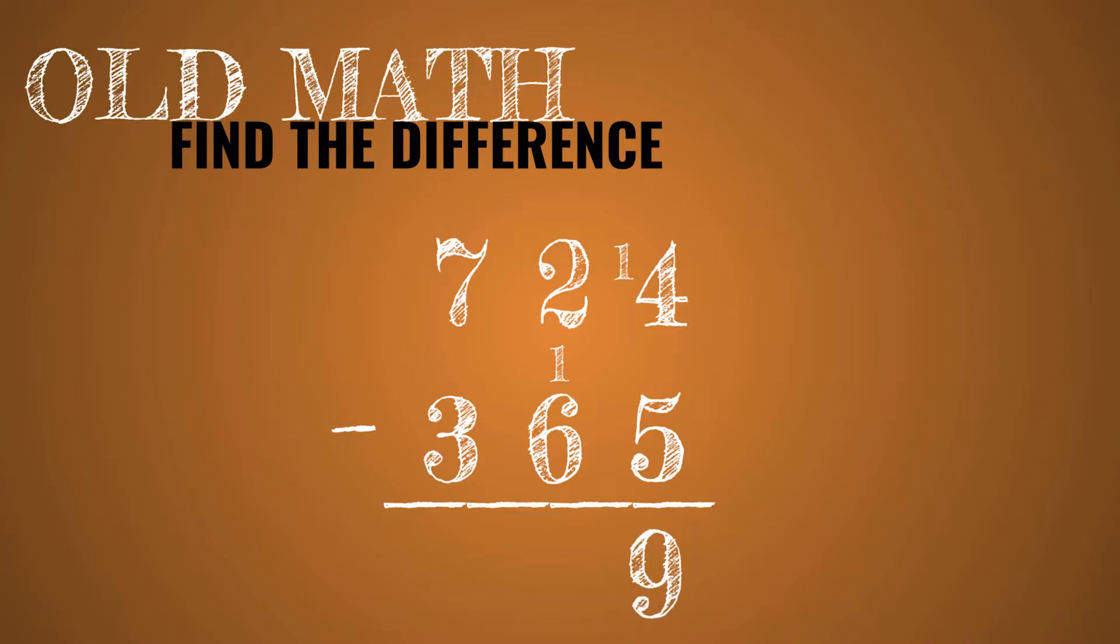Then you'd go to your tens place. The 2 cannot take away 1 or 6. So the 2 becomes a 12 and you pay back in the hundreds place. So 12 minus 1 minus 6 is 5. Then you go to the hundreds place. 7 minus 1 minus 3 is 3.